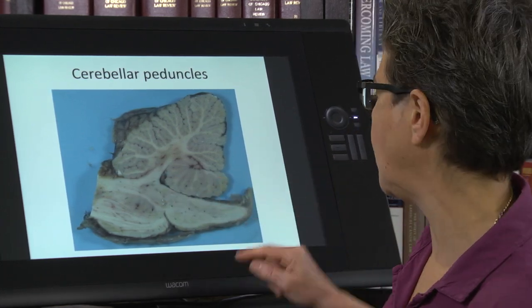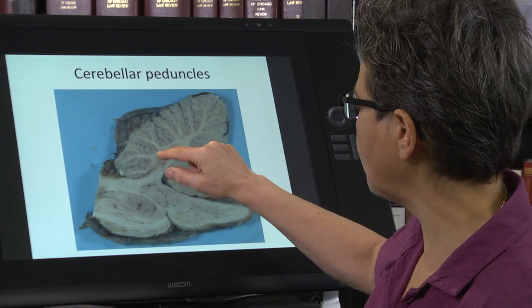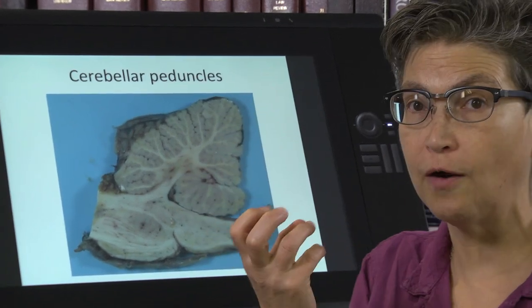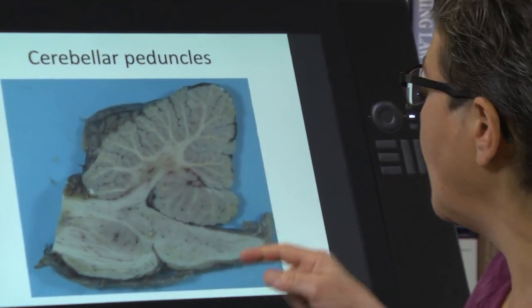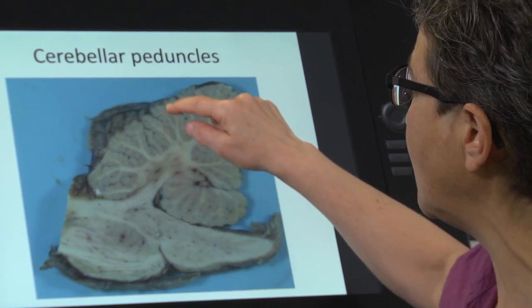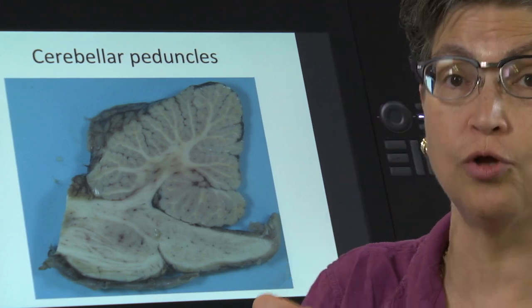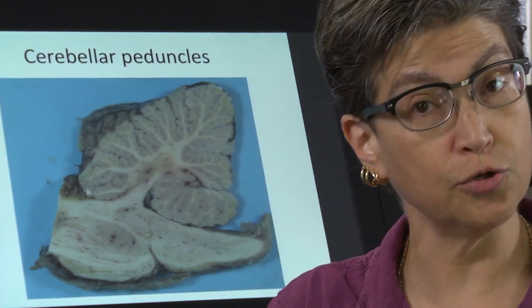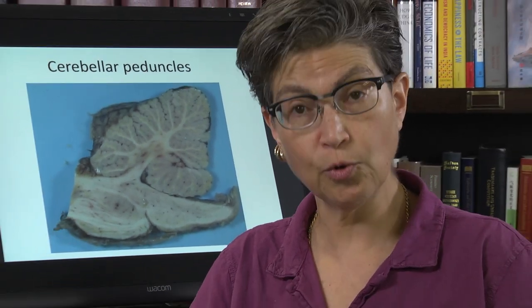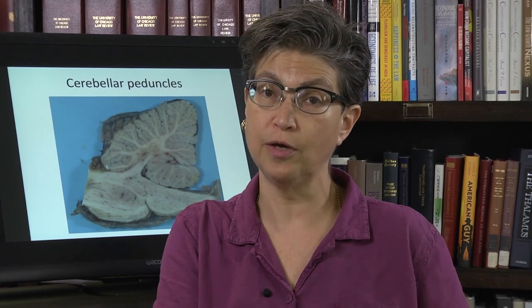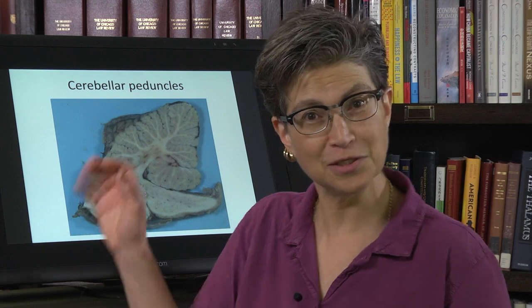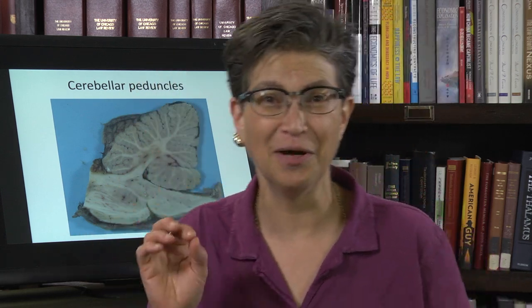The core of the cerebellum is white matter, and surrounding it at the edge — on the rind of it — is a gray matter structure called the cerebellar cortex. There are two cortices in the human brain: one is the cerebral cortex that we've touched on before, and the other is the cerebellar cortex. When people just say 'cortex,' they mean the cerebral cortex — this is the forgotten cortex.